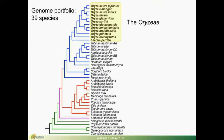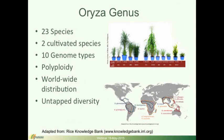For Grameen, the current release has 39 species. I've highlighted the Oryza species we're currently hosting. For the Oryza genus, there are 23 species. Of these, two are cultivated. We have 10 genotypes — they're polyploid, distributed worldwide, and they represent untapped diversity for the existing rice germplasms that are currently cultivated.